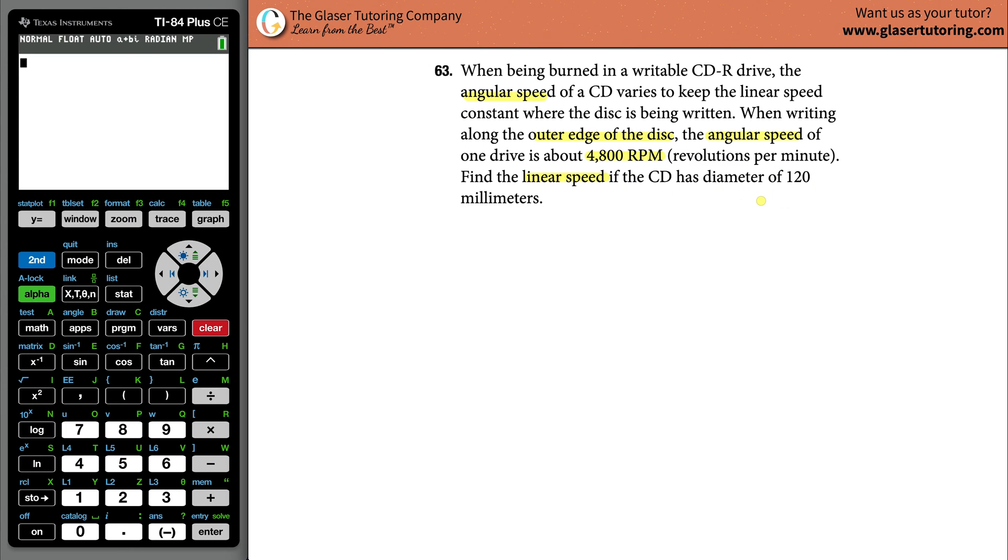Find the linear speed if the CD has a diameter of 120 millimeters. So basically, pretend that you are on a CD. It's a disc for all you young people out there. The diameter of this particular disc is going to be, as they mentioned, 120 millimeters. I'm going to write in the units here but basically leave them out for the entire calculation. Just keep in mind that they're millimeters.